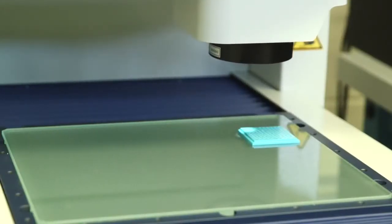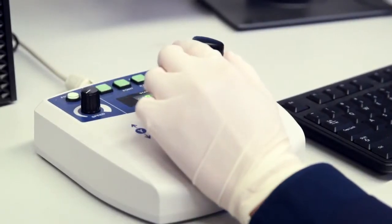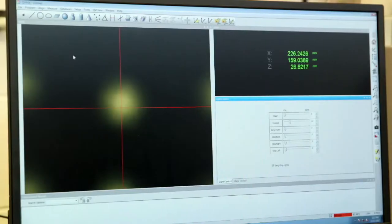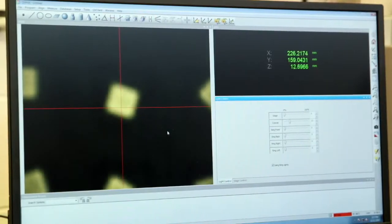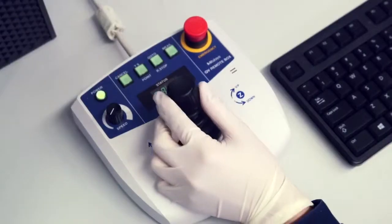Once wire bonding is complete, we use the Mitutoyo automatic microscope to visually inspect or take precision measurements of the parts. Turn on the recipe editor on the computer and write a recipe for the task.